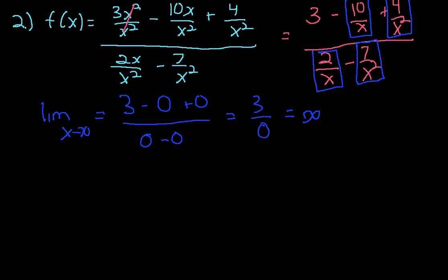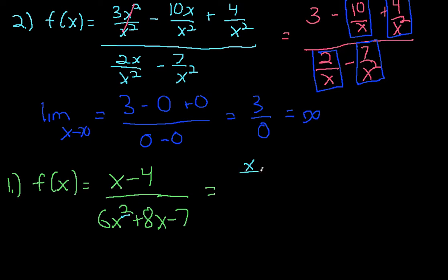Let's try another example. So maybe we have f of x equals x minus 4 over 6x squared plus 8x minus 7. So I'm not going to walk you through this one as much as I did the last one because hopefully you can do this and just kind of follow along. So identify the highest term of x, that's x squared, dividing every term by that, x over x squared minus 4 over x squared over 6x squared over x squared plus 8x over x squared minus 7 over x squared.